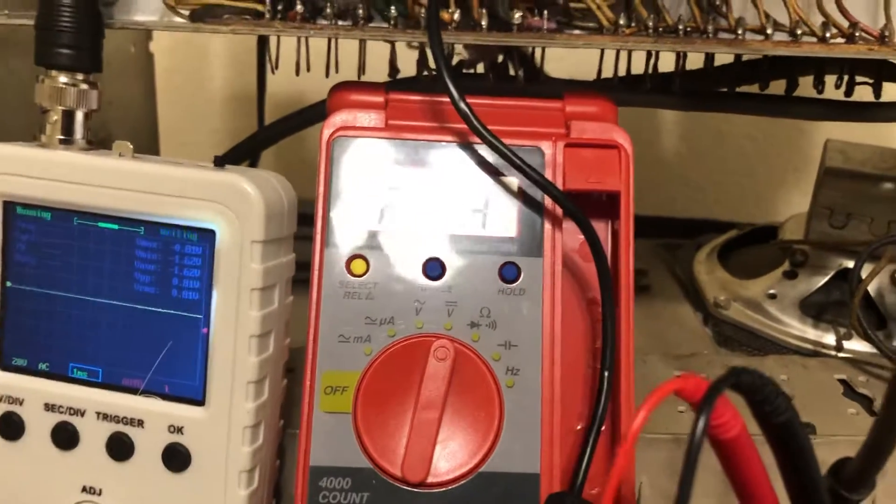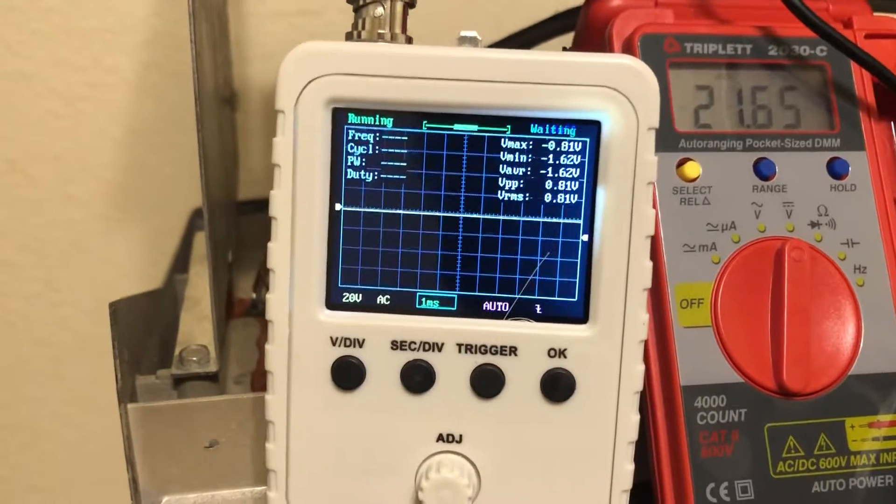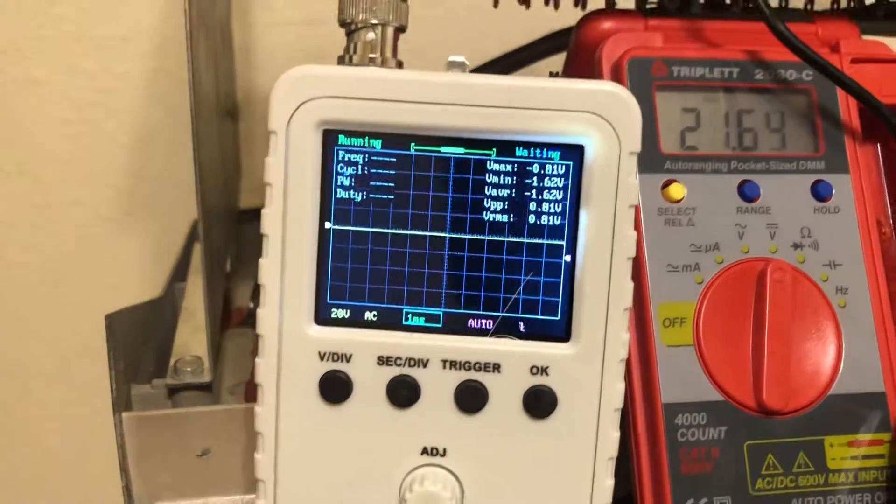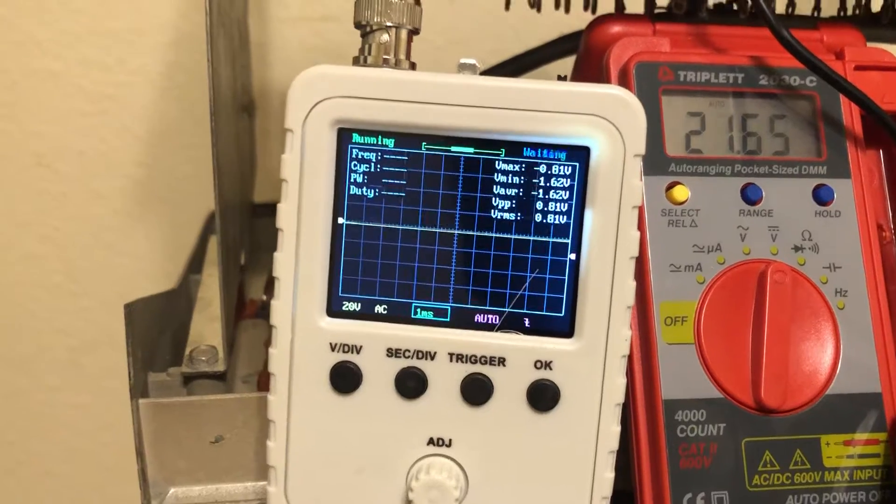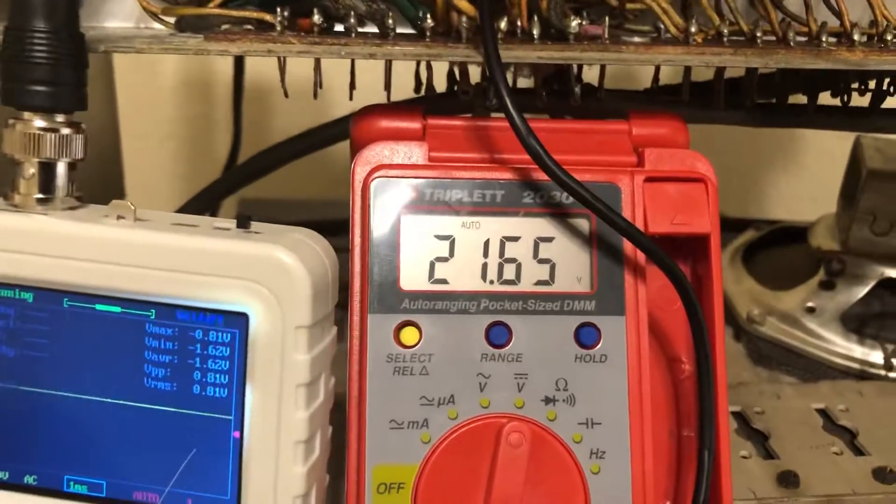I was also able to acquire on Amazon this cute little pocket oscilloscope for only 40 bucks. I have that hooked up on this multimeter, so the multimeter is showing 21 volts DC.